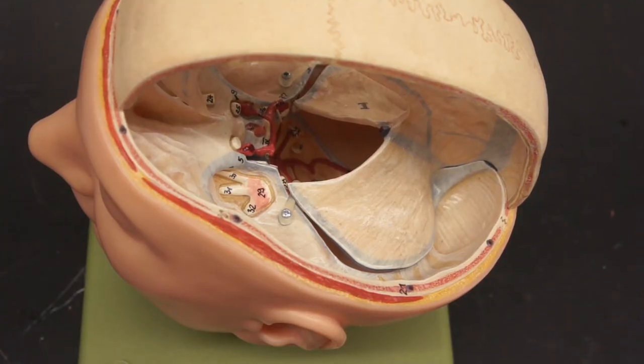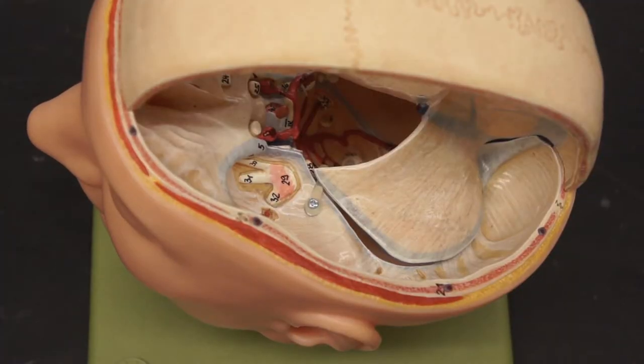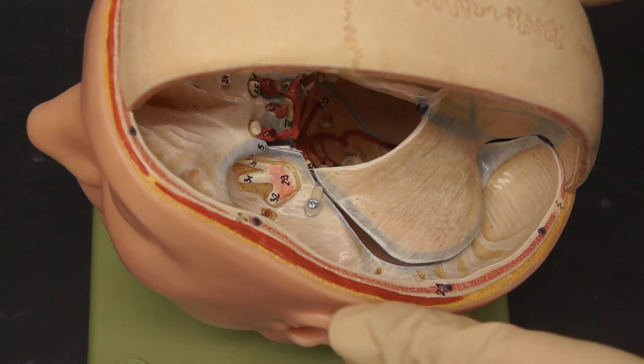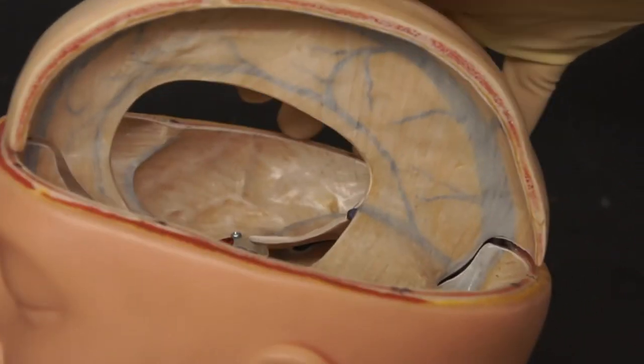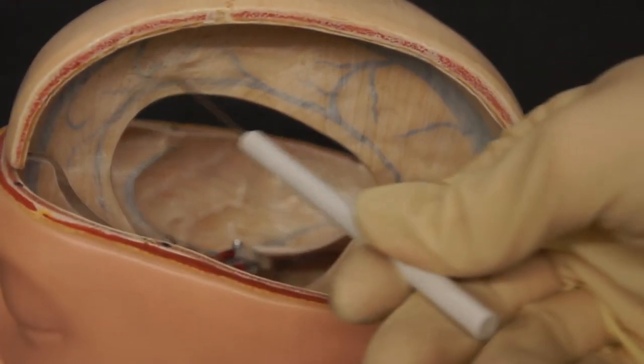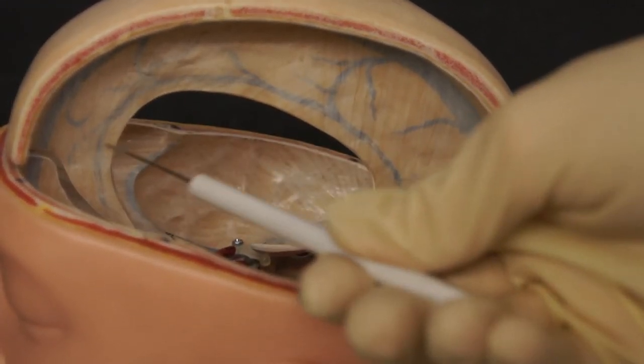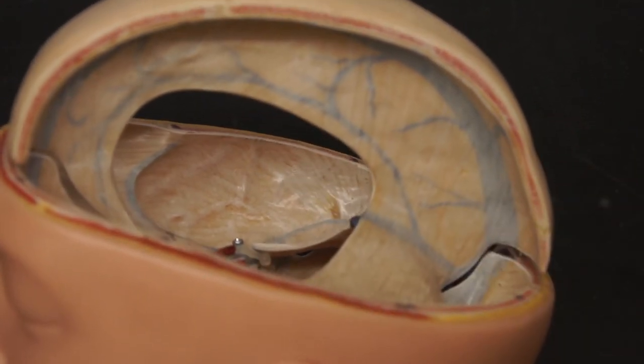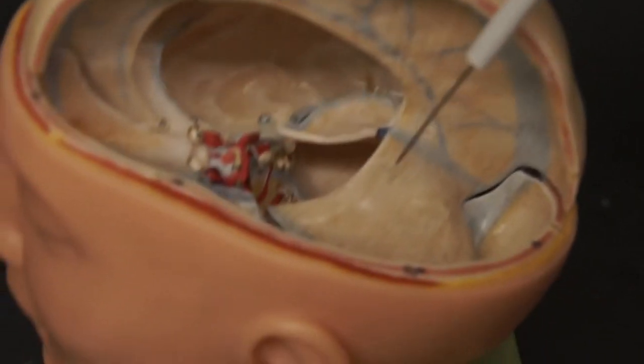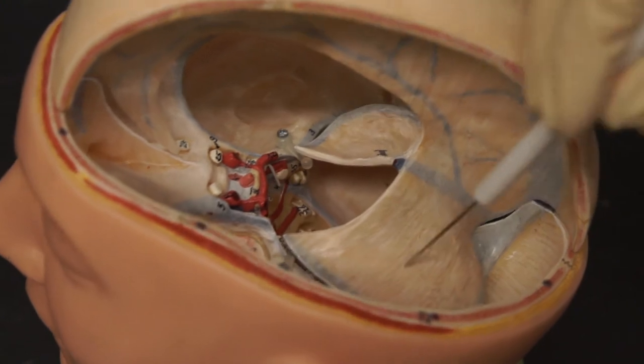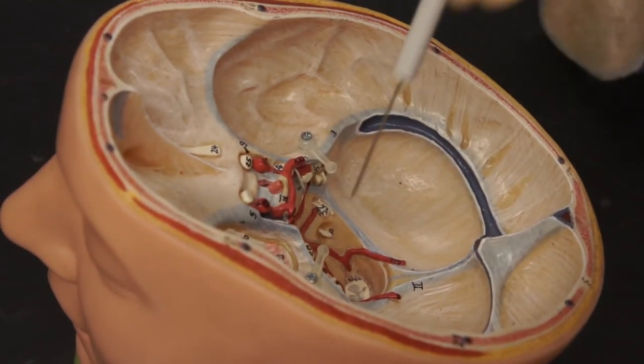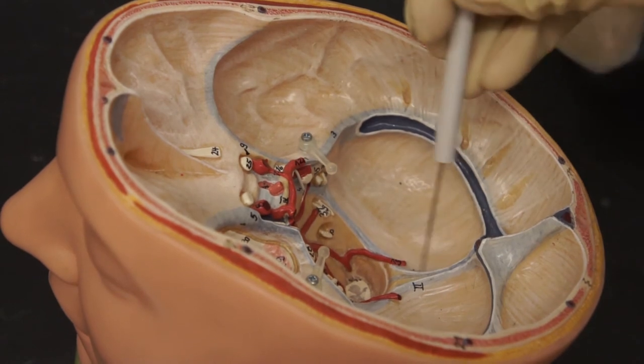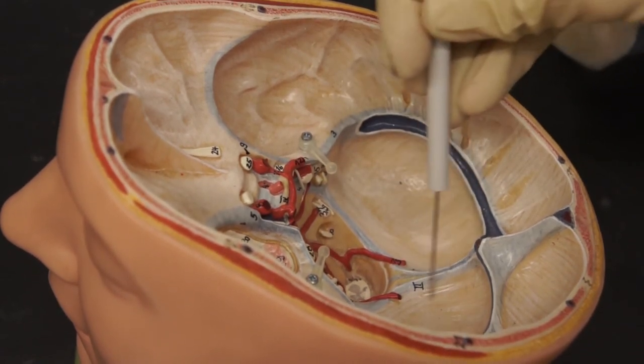This is a model of the head, with the brain removed. This model shows us some of the dural folds. So if we look here on the side, we have the falx cerebri, and then we have the tentorium cerebelli. It's a tent-like structure. If we take this off, we have this little projection, this dural projection. That's the falx cerebelli.